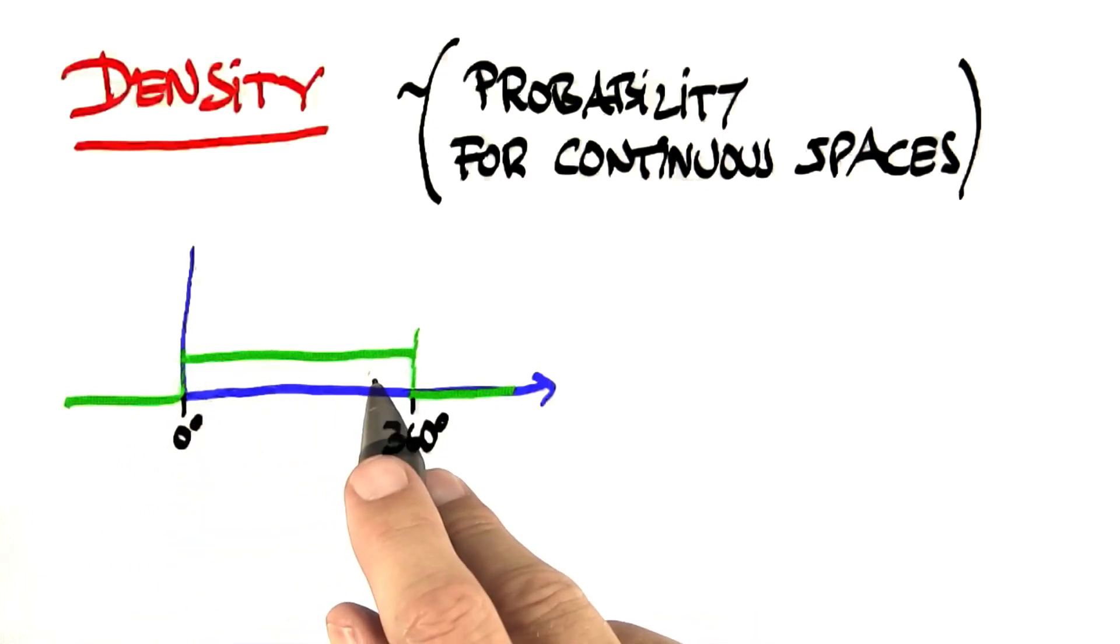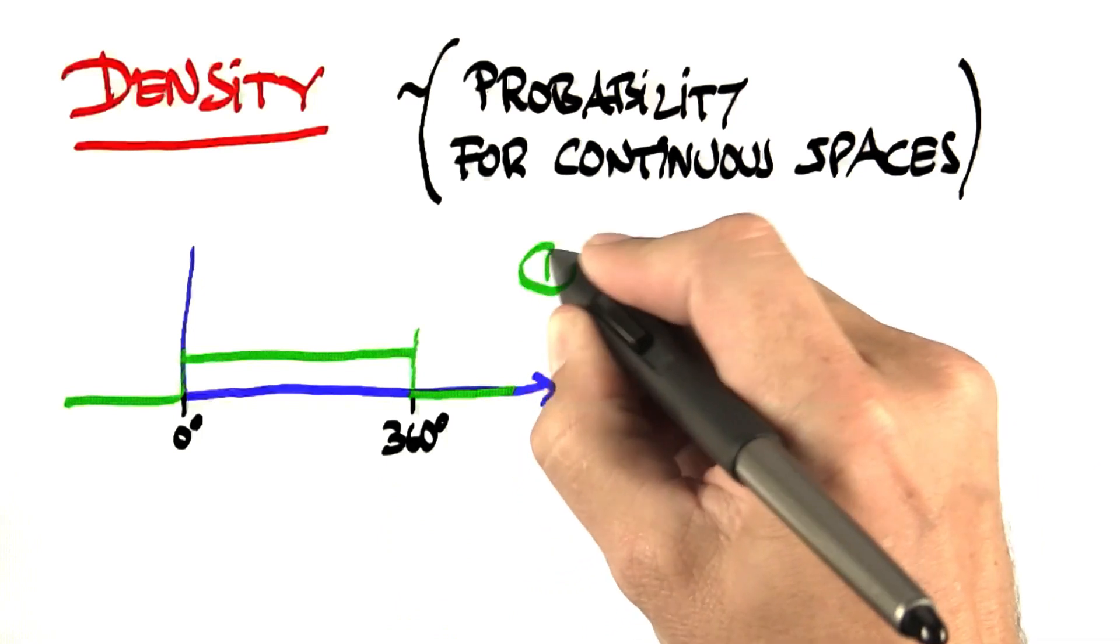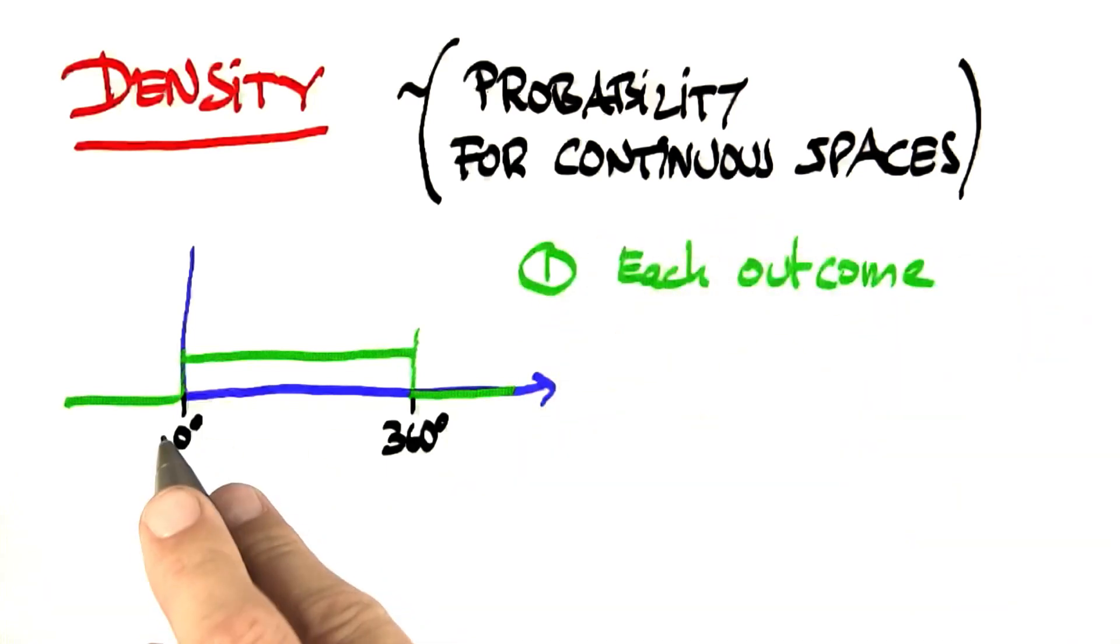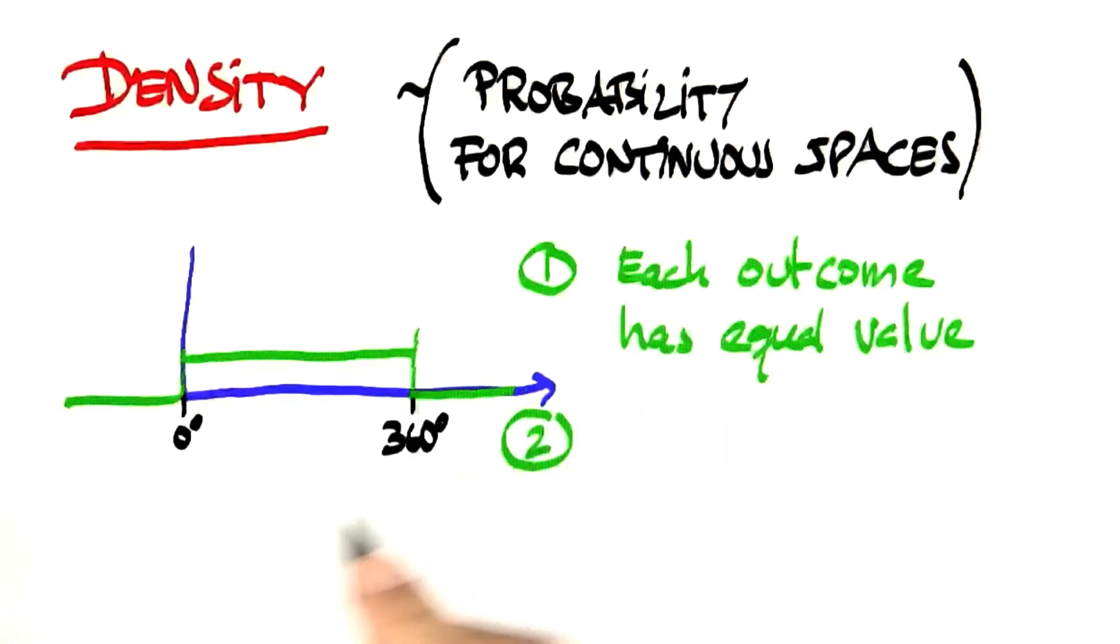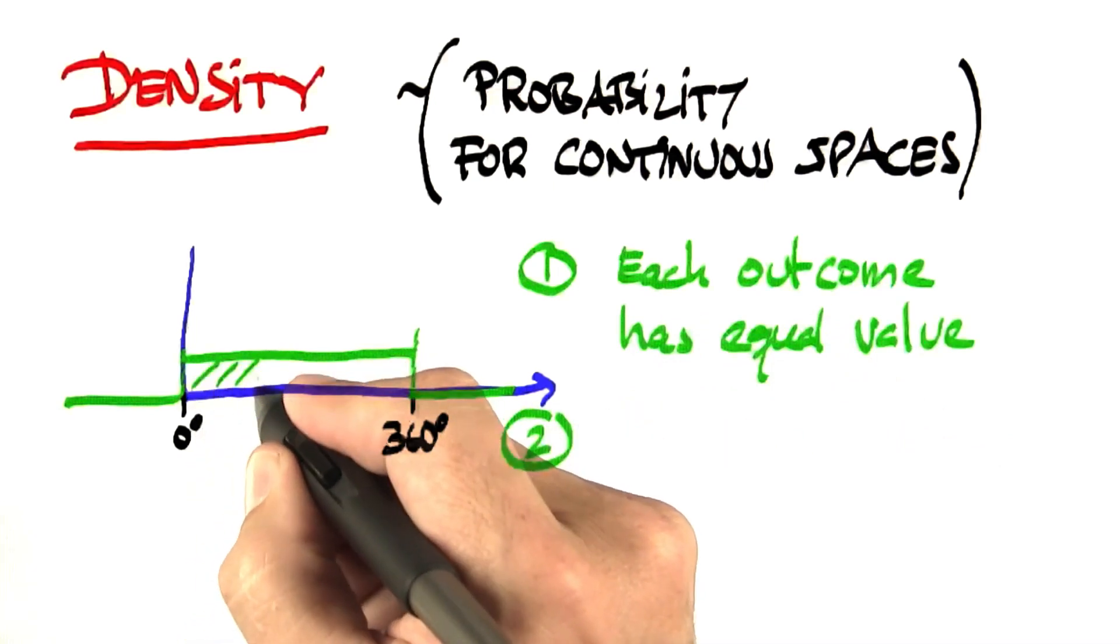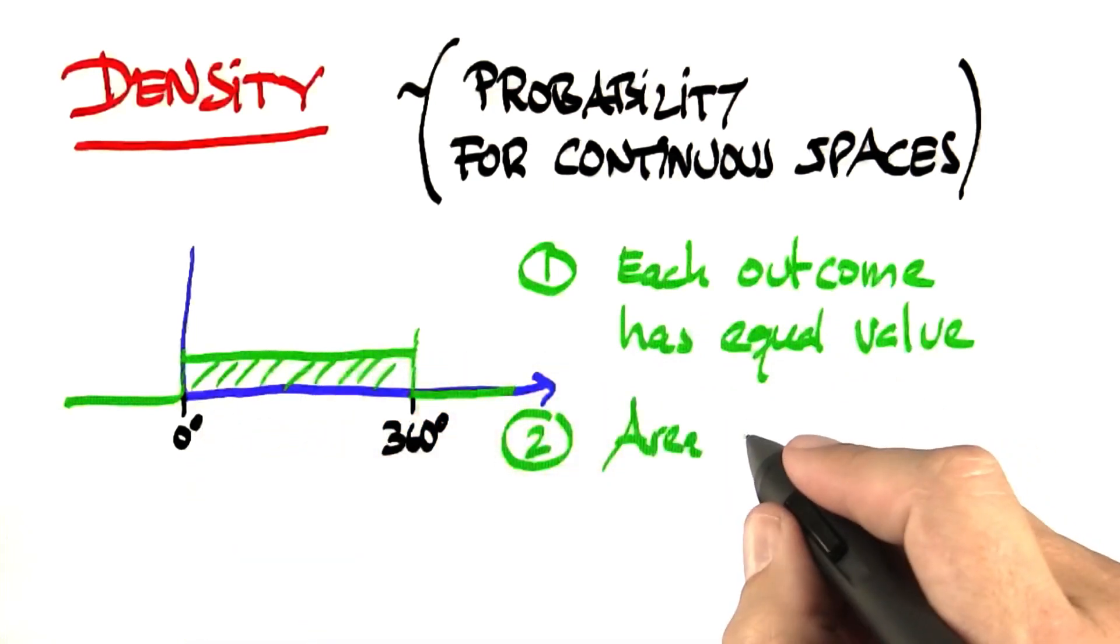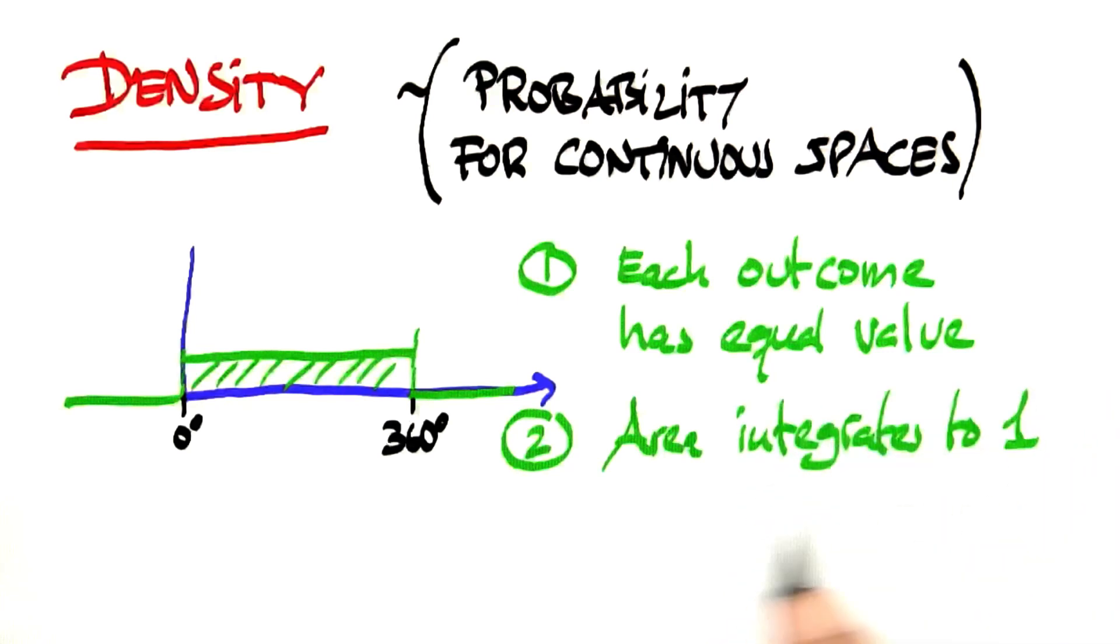So you can construct this function for me and I give you two constraints. Constraint number one: each outcome in the range of 0 to 360 has an equal value. And constraint number two: the area under this function sums up or integrates to one, which means this area over here is just one.